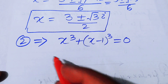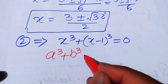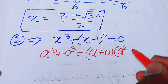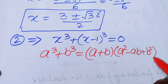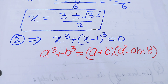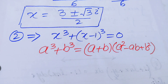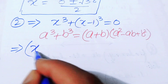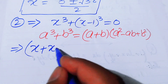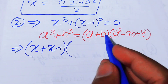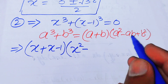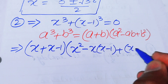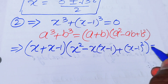For equation 2, we use the sum of cubes: a³ plus b³ equals (a plus b)(a² minus ab plus b²). With a = x and b = x−1, this gives: (x + (x−1)) times (x² minus x(x−1) plus (x−1)²) equals 0.